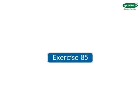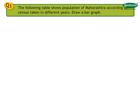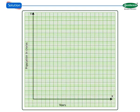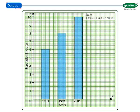Let us solve exercise 8.5. Number 1: The following table shows population of Maharashtra according to census taken in different years. Draw a bar graph. In year 1981 the population was 6 crores, in 1991 it was 8 crores, and in 2001 it was 10 crores. Solution 1: Take year on X axis, population on Y axis. Scale of Y axis is 1 unit equal to 1 crore. Mark 0 to 10 on Y axis leaving 1 cm distance. Mark years on X axis leaving equal distance. Draw a column corresponding to the population per year. Thus, we have drawn the bar graph representing the population of Maharashtra.